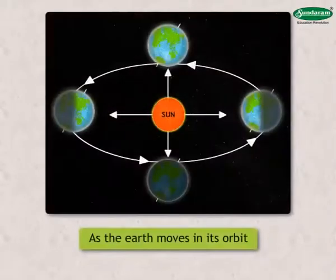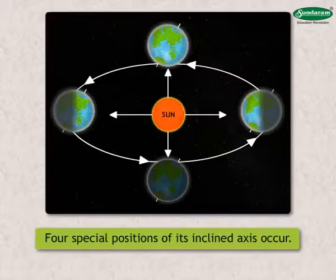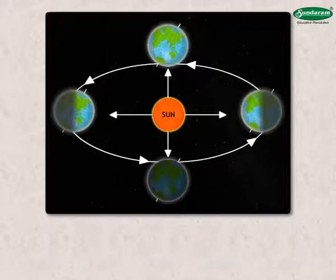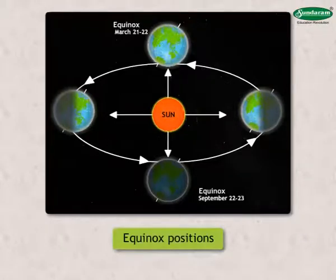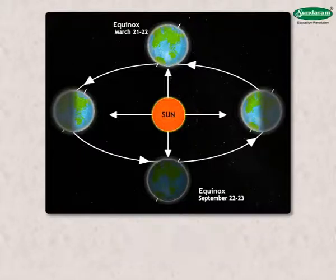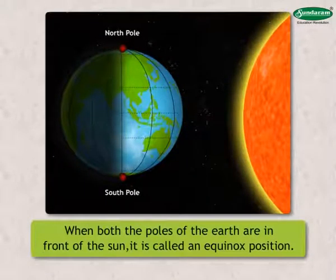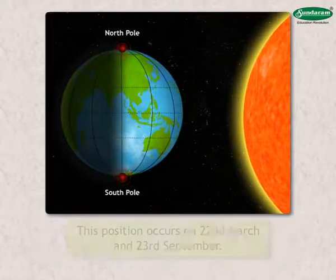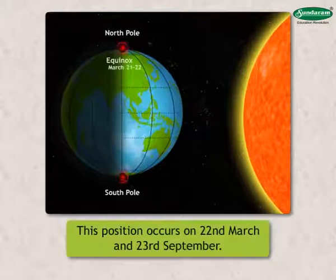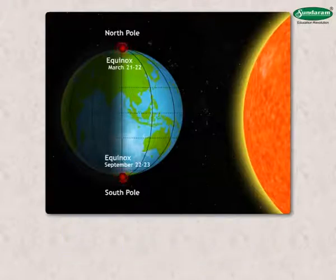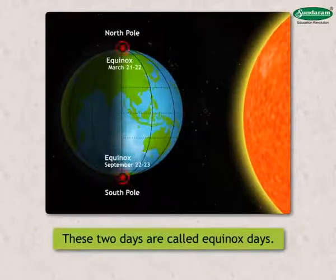As the earth moves in its orbit, four special positions of its inclined axis occur. Two of these are called equinox positions and two are called solstice positions. When both the poles of the earth are in front of the sun, it is called an equinox position. This position occurs on 22nd March and 23rd September, so these two days are called equinox days.